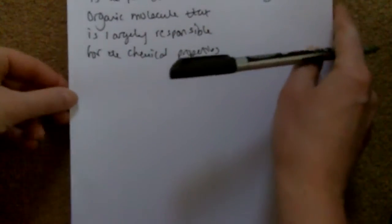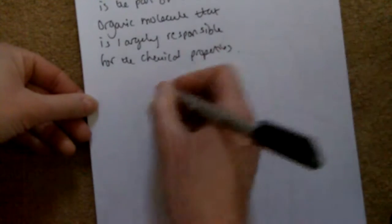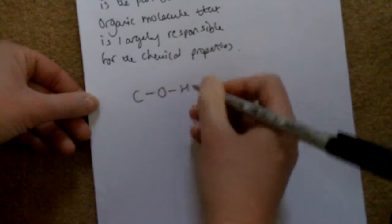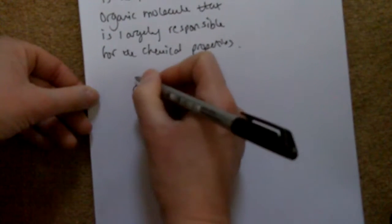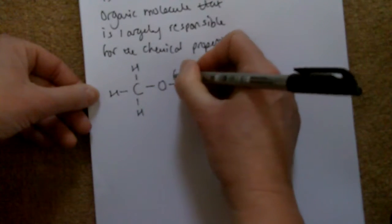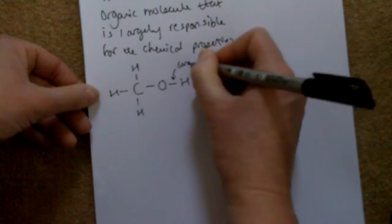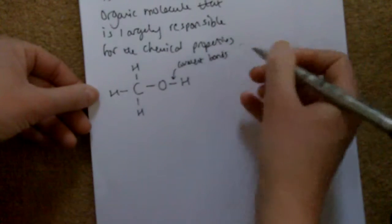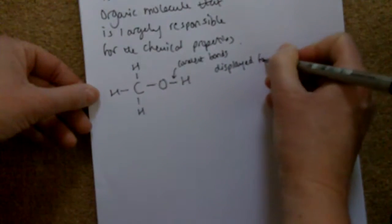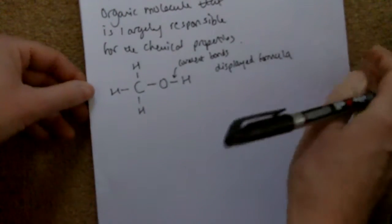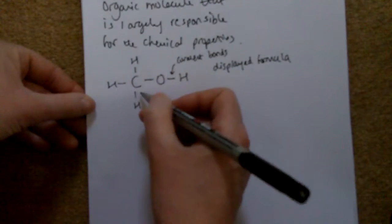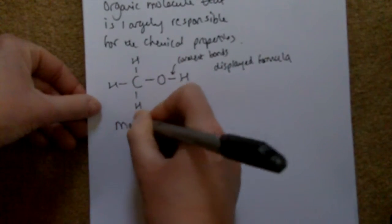The simplest alcohol in the homologous series has one carbon with an O and an H attached. These lines represent covalent bonds. When every bond is shown in a diagram, it's called a displayed formula.